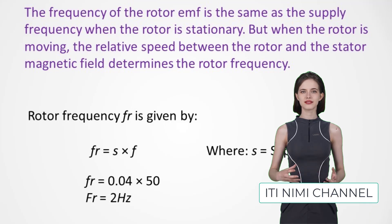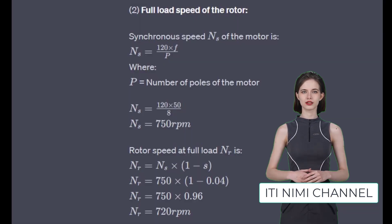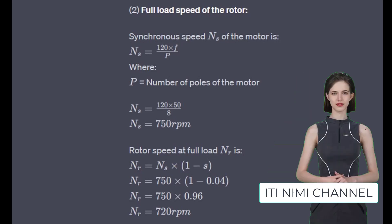Next, let's find the synchronous speed of the motor. The formula is: synchronous speed equals 120 multiplied by frequency divided by number of poles. This gives us a synchronous speed of 750 RPM.